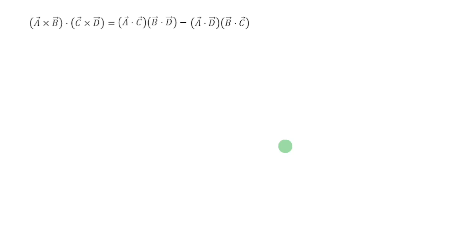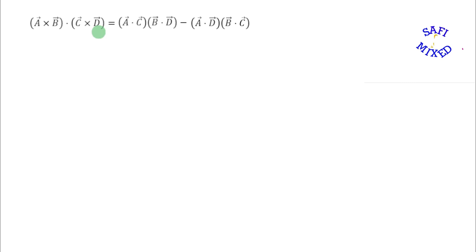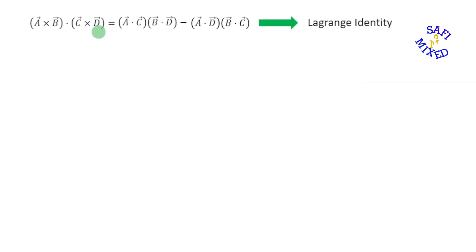Hey guys, welcome to Safi Maths. In this video I'm going to prove this vector identity, which consists of four different vectors. This vector identity is also known as the Lagrange identity. To prove this, I first want to find the vector product of the two vectors in each pair of brackets on the left side of this relation.